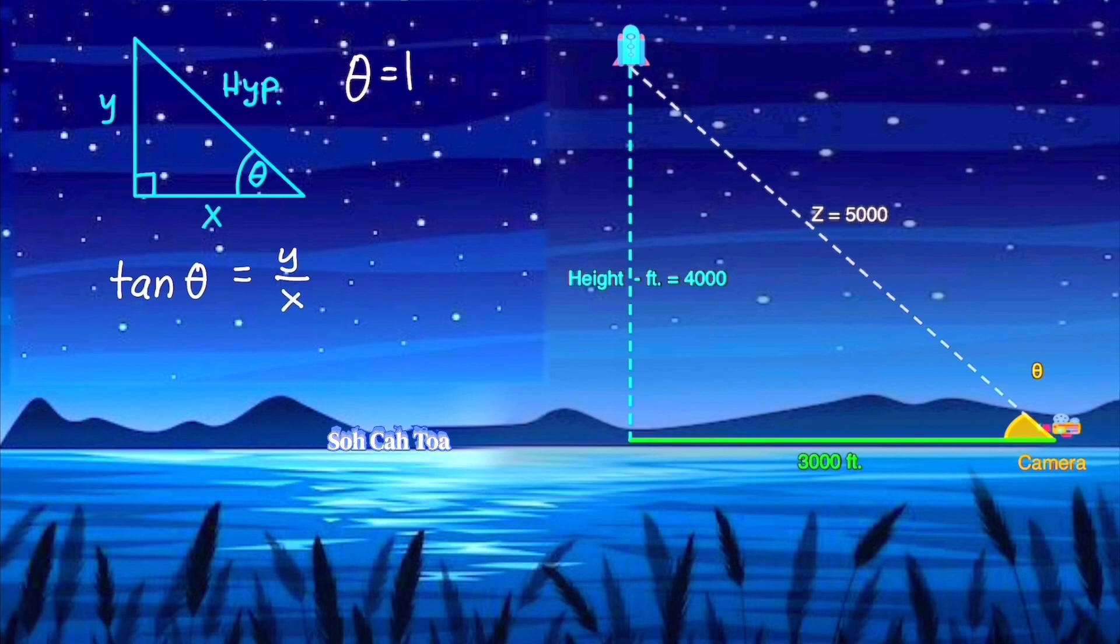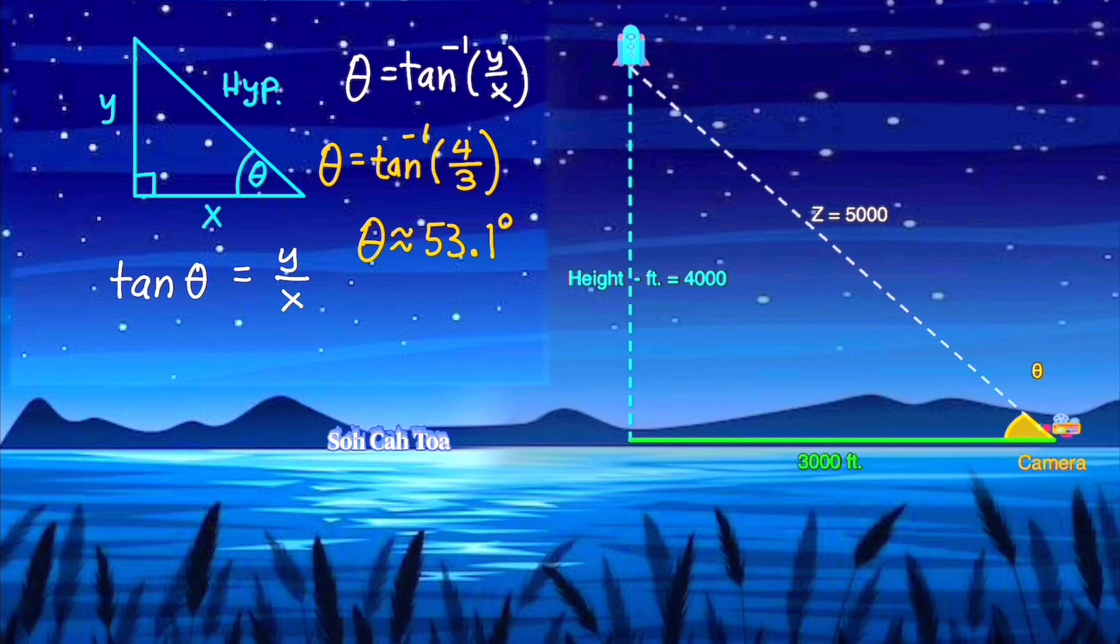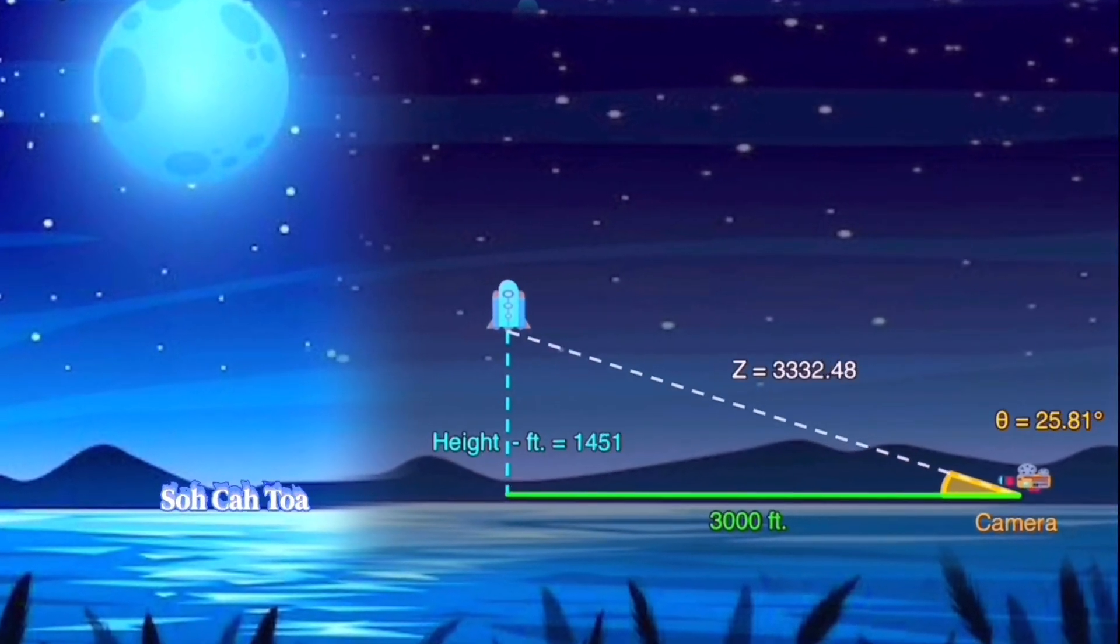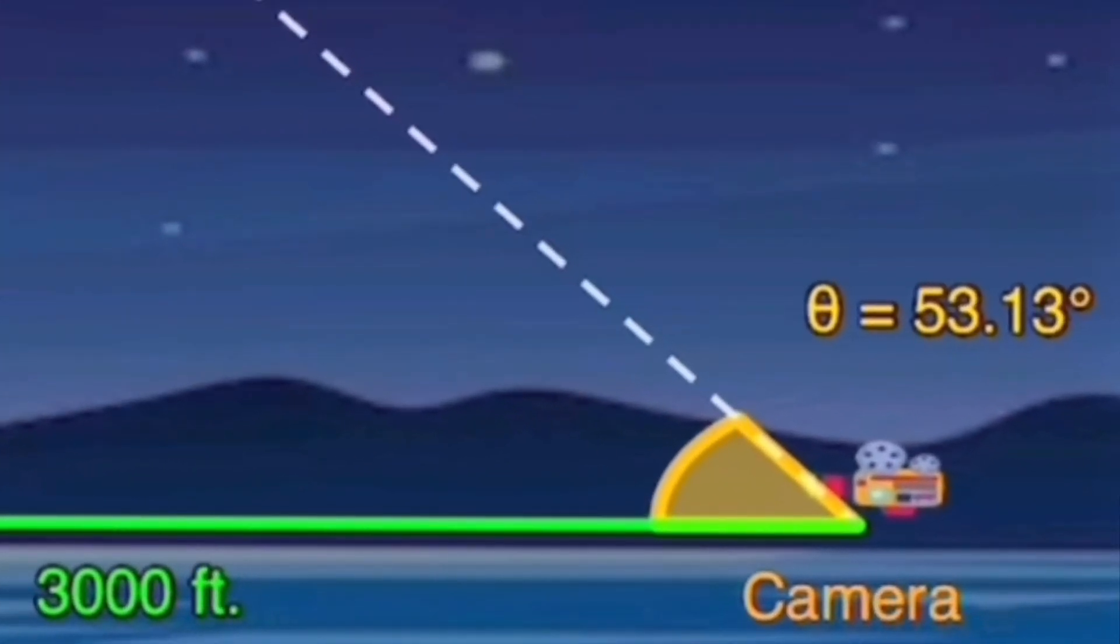And from SOHCAHTOA, we choose the tangent ratio, y over x. And then employing the inverse tangent to find the angle, the angle will be the inverse tangent of values y over x, or 4,000 over 3,000. We can simplify that by taking the inverse tangent of 4 over 3. And using a calculator, we approximate this angle to be 53.1 degrees. So let's see if our model confirms our answer. And we see that indeed it does. Level 2 complete.